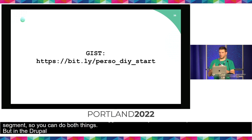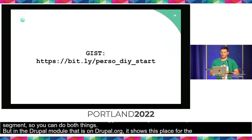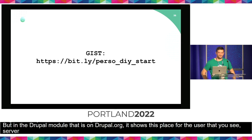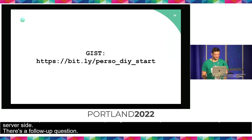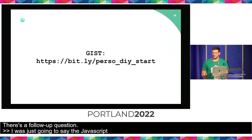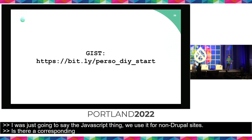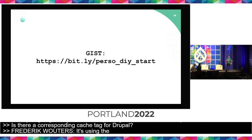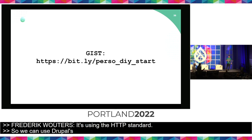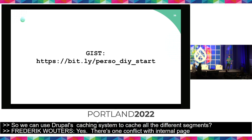In the Drupal module that is on Drupal.org, it just displays for the specific user server side. It's using the HTTP standard Vary header. So we can use Drupal's caching system to cache all the different segments. There's one conflict with internal page cache, but for the rest, everything with caching just works.